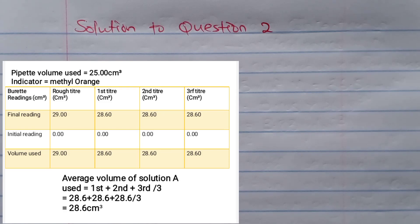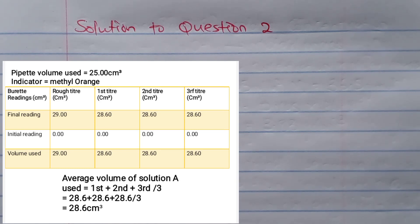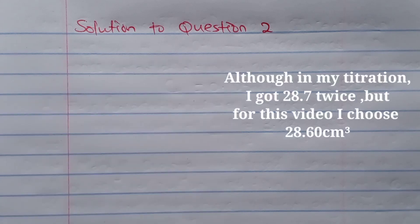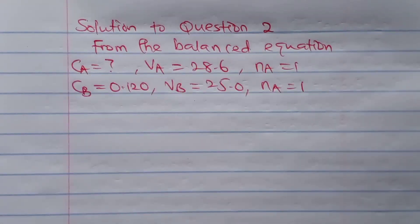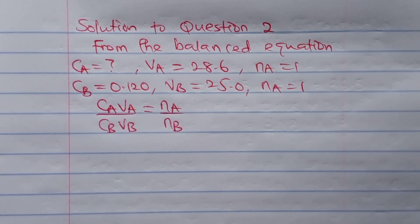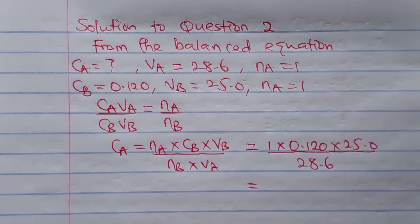From the balanced equation, NA = 1 and NB = 1. VB is given as 25 cm³ from the pipette, VA is 28.6 cm³ from the average volume of acid used, and CB is already given as 0.120 mole per dm³. The only unknown is CA. Using CA·VA / CB·VB = NA/NB, making CA the subject and inserting the values, leaving to three significant figures, we get our answer for CA.